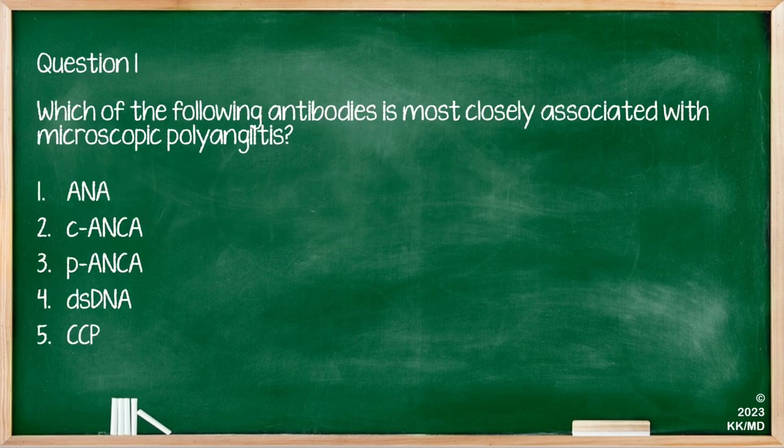Which antibody is most closely associated with microscopic polyangiitis (MPA)? Options are ANA, C-ANCA, P-ANCA, dsDNA, and CCP. The correct answer is P-ANCA, which is positive in approximately 70% of cases with microscopic polyangiitis.